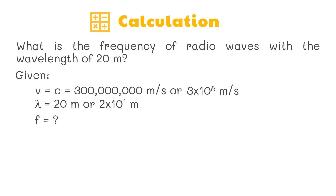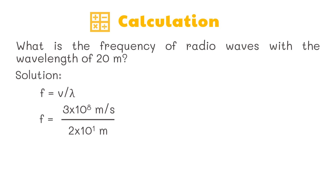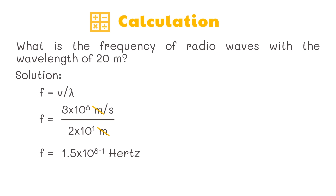To solve this problem, we use the formula: wave speed equals wavelength times frequency. Since we are solving for frequency, we derive the formula to: frequency equals wave speed divided by wavelength. Substituting wave speed as 3 times 10 raised to the 8th power meters per second and wavelength as 2 times 10 raised to the 1st power meters, we divide 3 by 2 and cancel the common unit of meters. The unit remaining is per second, which is hertz. The frequency of the radio waves is 1.5 times 10 raised to the 7th power hertz.